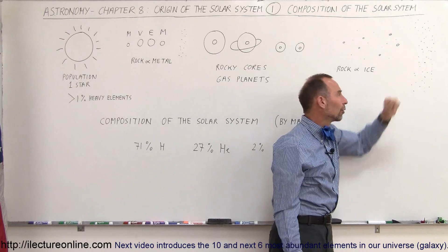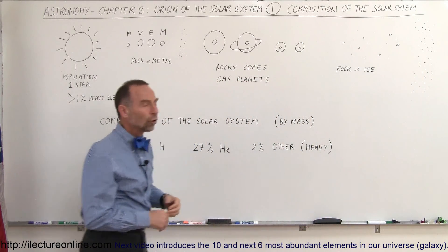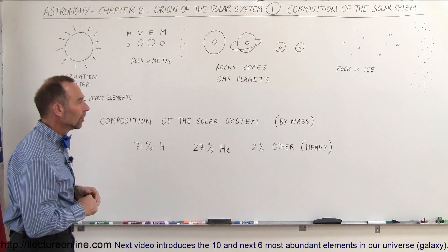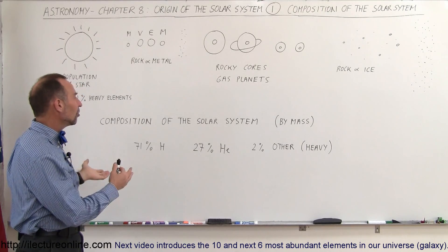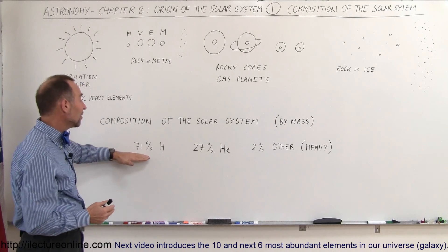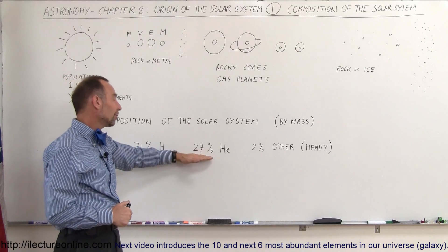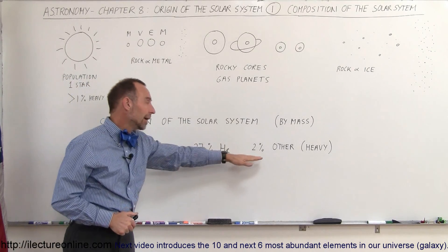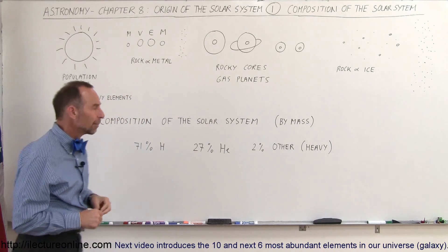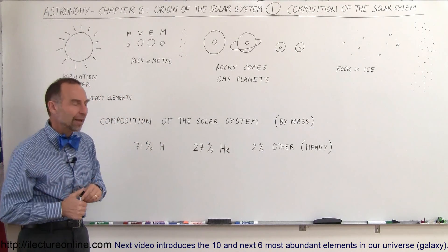And then we have, of course, what we call the Oort cloud way out there, which is also pretty well made out of rock and ice. So the composition of the solar system by mass is roughly 71% hydrogen, 27% helium, and 2% other elements — the heavy type elements. Anytime it's beyond hydrogen and helium, we consider them heavy elements.